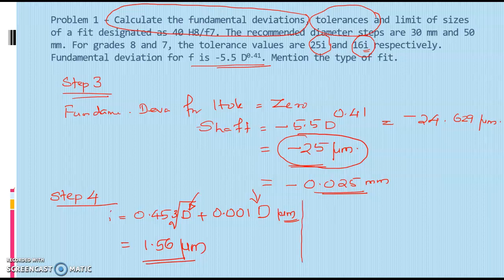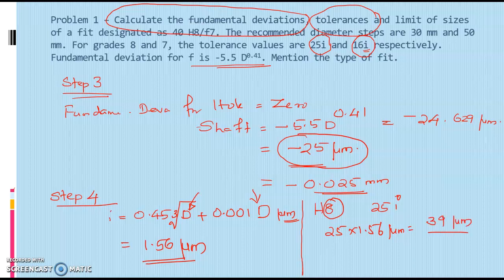With i known, we find the tolerance grades. For the hole H8, the tolerance grade is 8 and the equation is 25i. So 25 times 1.56 microns equals 39 micrometers. For the shaft F7, the grade is 7 and the equation is 16i. Multiplying i by 16 gives 25 micrometers.